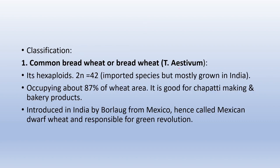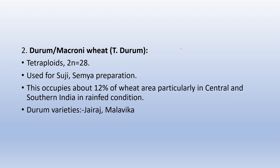Classification of wheat: First species is common bread wheat — Triticum aestivum, a hexaploid species with chromosome number 2n = 42. It occupies about 87% of wheat area. In India, about 80% of wheat area is under Triticum aestivum cultivation. It is good for making chapati and bakery products and was introduced by Borlaug from Mexico — hence called Mexican dwarf wheat. Second species is durum wheat, also called macaroni wheat, a tetraploid species with 2n = 28, used for preparation of suji and semiya. It occupies 12% of wheat area in central and southern India.